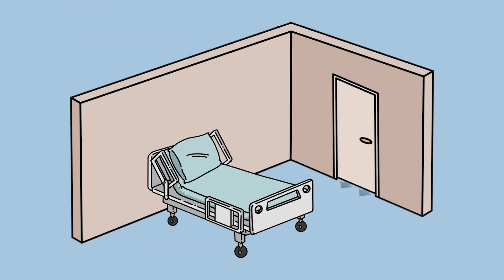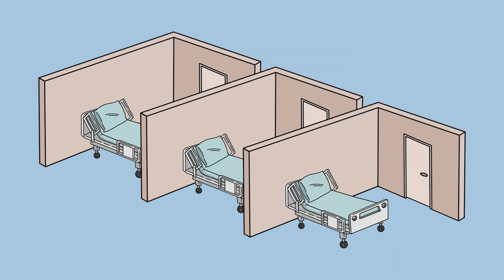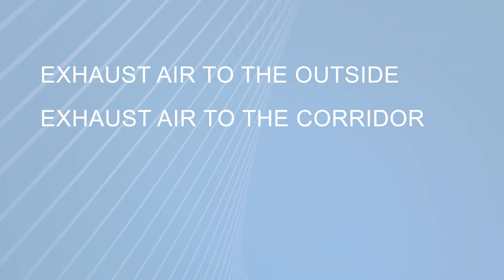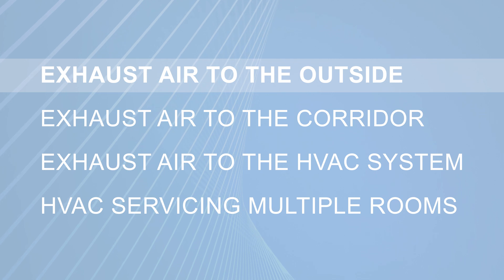Who knew that a single negative pressure room could be so important? While most of the time new AII rooms are exhausted directly to the outside, at times a facility might need to flex and increase the number of negative pressure rooms by converting existing rooms. There are several ways to achieve negative pressure, and in this series we are going to explore four different options, starting with the best practice: exhausting directly outside.